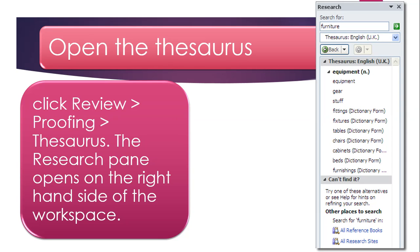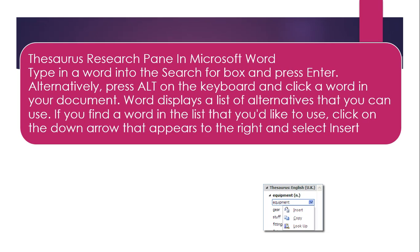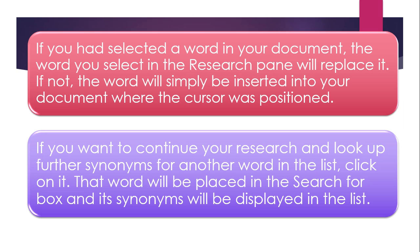Now we are going to review the results using the Research panel in Microsoft Word. Type a word into the Search For box and press Enter. Alternatively, press Alt on the keyboard and click a word in your document. Word displays a list of alternatives that you can use. If you find a word in the list that you'd like to use, click on the down arrow that appears to the right and select Insert. If you had selected a word in your document, the word you selected in the Research panel will replace it. If not, the word will simply be inserted into your document where the cursor was positioned. If you want to continue your research and look up further synonyms for another word in the list, click on it — that word will be placed in the Search For box and its synonyms will display in the list.